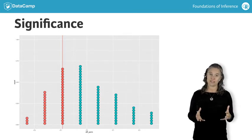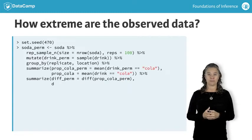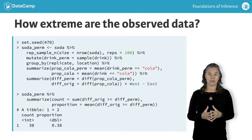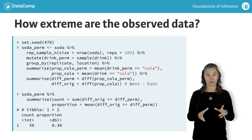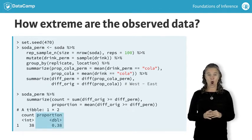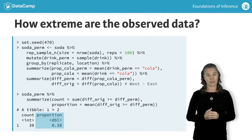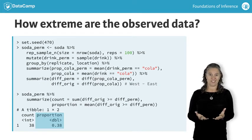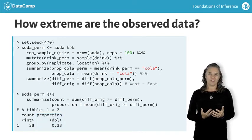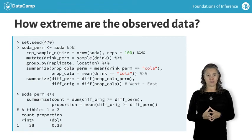To be more precise, R can count the number of times the null data were more extreme than the observed data. Here, we identify that 38% of the null statistics are more extreme than the difference which was observed. 38%, in conjunction with the dot plot, give evidence that the data are consistent with the permuted distribution. We have no evidence that rates of COLA preference differ by coast.